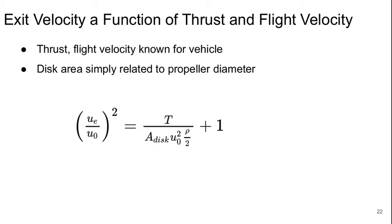So that exit velocity can be written as a function of thrust and flight velocity, because these normally would be known. And the disk area is just the propeller cross-sectional area, related simply to the diameter. And we can work out that u_e over u_0 squared equals the thrust divided by the area of the disk times u_0 squared over 2, plus 1. So now we're getting somewhere.